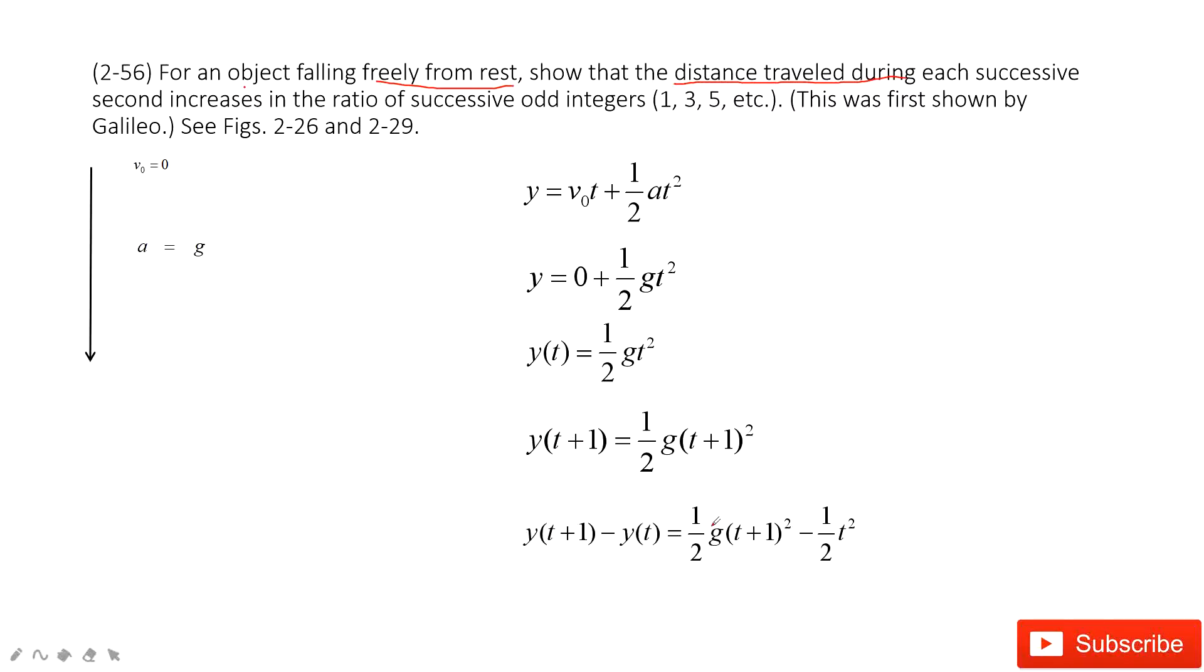So it's in this way. Then we can organize this equation. It looks like this: g divided by 2, which is constant, times the term 2t plus 1.